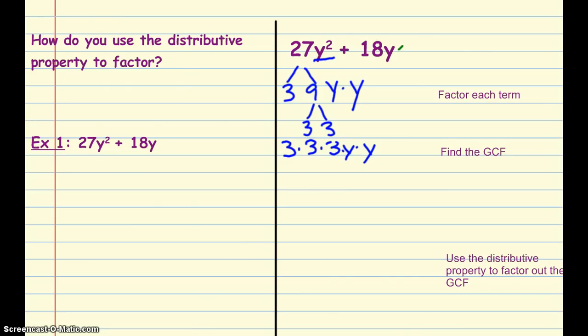The second term, I know 18 is broken up into 2 times 9, and then we have the y. 2 is prime, 9 is not. So I have 3 times 3. So my second monomial can be broken down as 2 times 3 times 3 times y. And like the last lesson, we look at what they have in common, and in this case they each have 3, 3, and y. And when we multiply that together, that becomes 9y. So the greatest common factor of each of those terms is 9y.